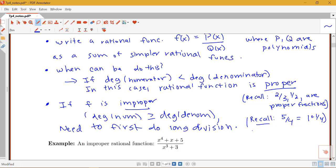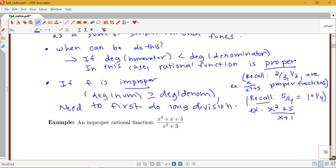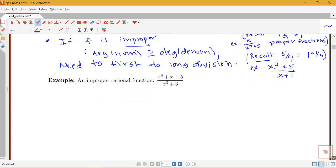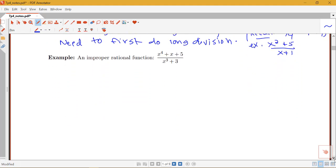An example of something that's an improper rational function would be something like x squared plus five over x plus one, whereas something that's a proper rational function would be something like x over x squared plus five here. So with this x over x squared plus five, x has degree one, x squared plus five has degree two, and one is less than two. With this x squared plus five over x plus one, x squared again degree two, x plus one degree one, so I have a bigger degree in the numerator. So if we have something that's proper, we're going to be able to follow a certain procedure to break it up into smaller pieces. If it's improper, we have to do an initial first step of doing long division.